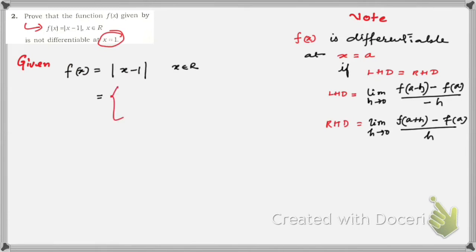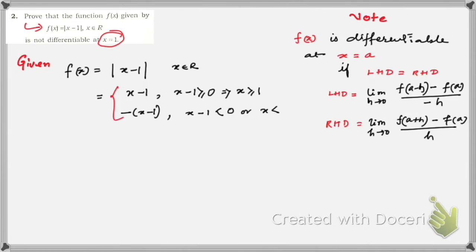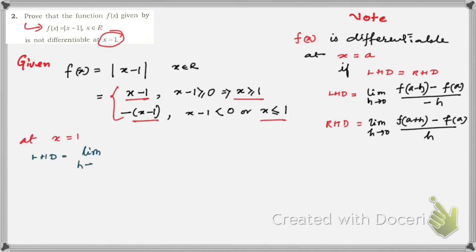The given function is f(x) = |x − 1| where x belongs to ℝ. This can be expressed as (x − 1) when x ≥ 1, and −(x − 1) when x < 1. Now let us find the left-hand derivative and right-hand derivative at x = 1. If they are equal, the function is differentiable; otherwise it is not.